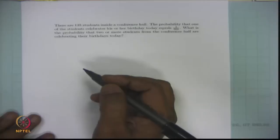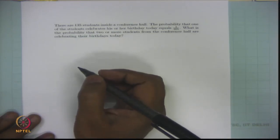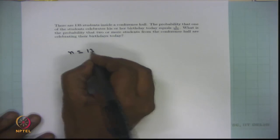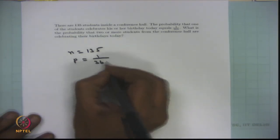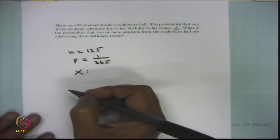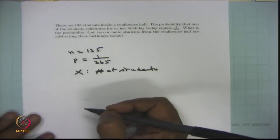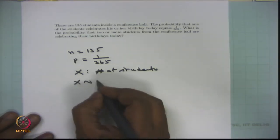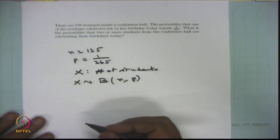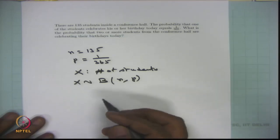Let X be the number of students celebrating their birthday, with n = 135 and p = 1/365. We can model X as following a binomial distribution with parameters n = 135 and p = 1/365. However, since n is very large and p is very small (close to 0), it is appropriate to approximate the binomial distribution with a Poisson distribution, where lambda = n × p = 135/365 = 27/73.